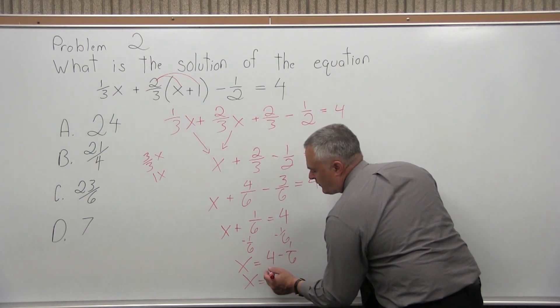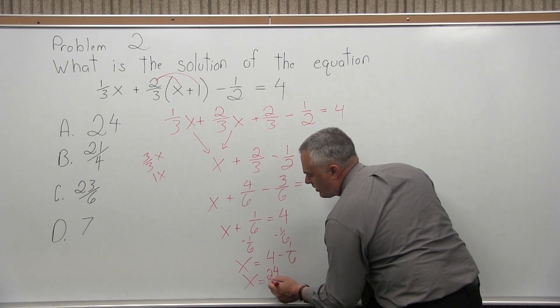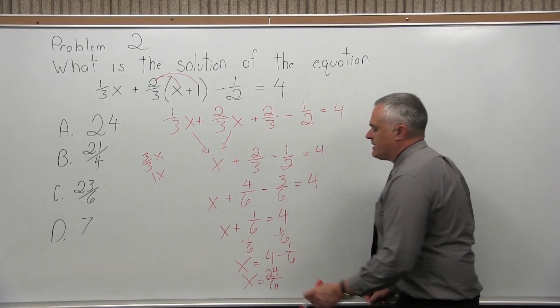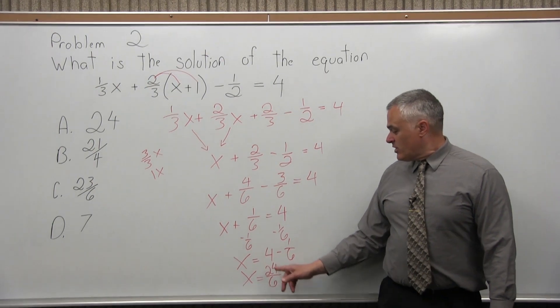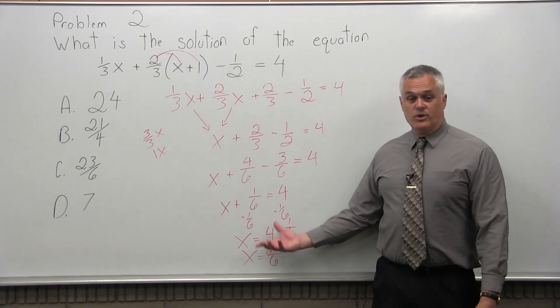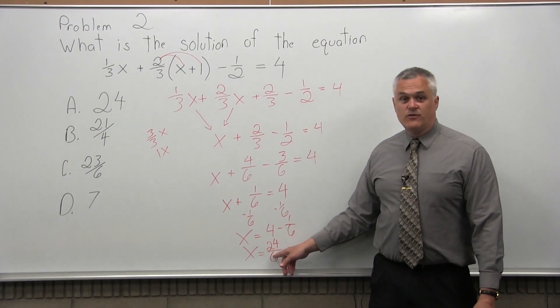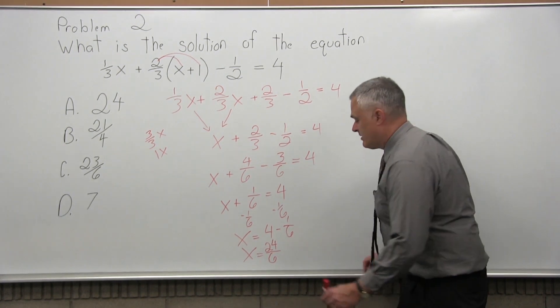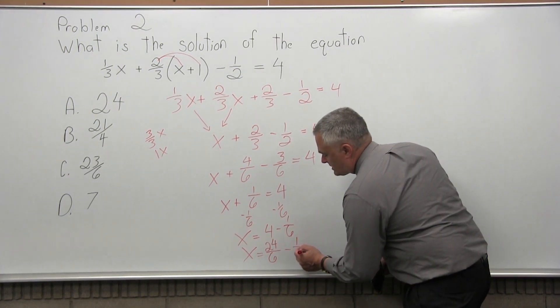That's sort of the same situation going on. I'm subtracting two numbers. One is a fraction. I need to have a common denominator. The 4 doesn't even have a denominator. So, x equals, let me write that 4 as 24 over 6.